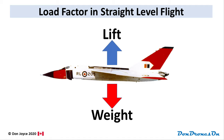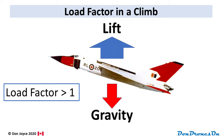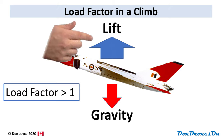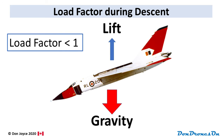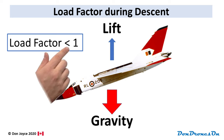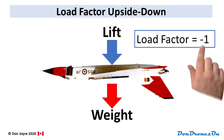In straight and level flight the lift and weight balance exactly, so the load factor is 1.0. If you increase the lift by adjusting the angle of attack of the wings and start to climb, the lift is greater than the weight so the load factor is greater than one. If the aircraft descends the load factor becomes less than one, and it's even minus one if the aircraft is upside down.